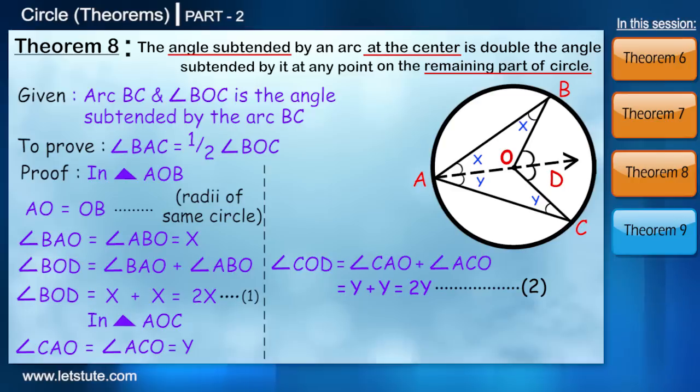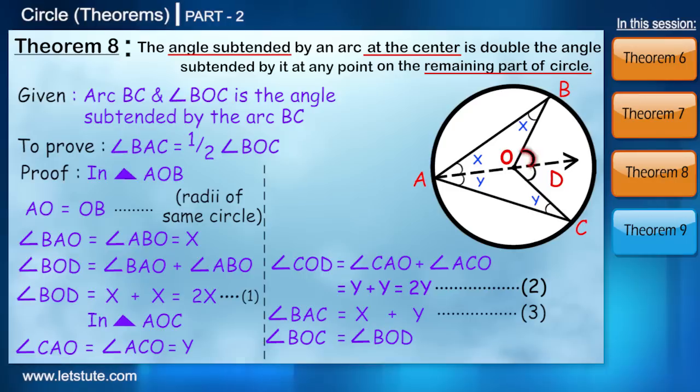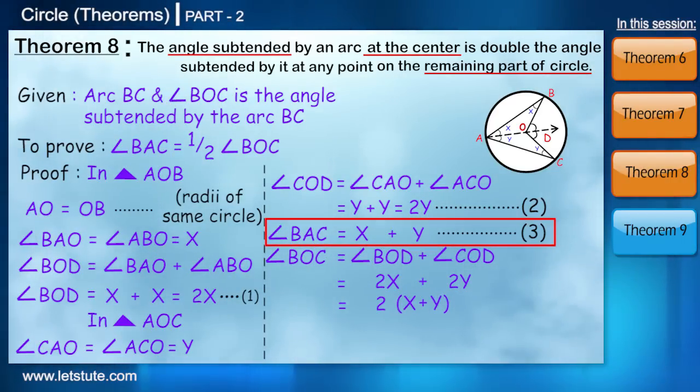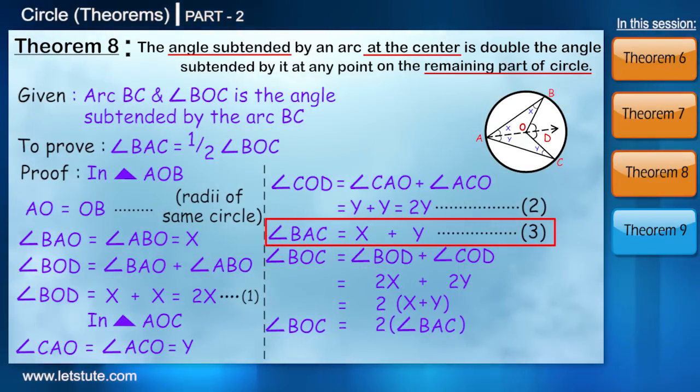If you have a look at the diagram, we can see that angle BAC is nothing but X plus Y. Correct? And angle BOC is equal to angle BOD plus angle COD which is nothing but 2X plus 2Y which is equal to twice of X plus Y. So now from this, we can say that angle BAC is equal to half of angle BOC.